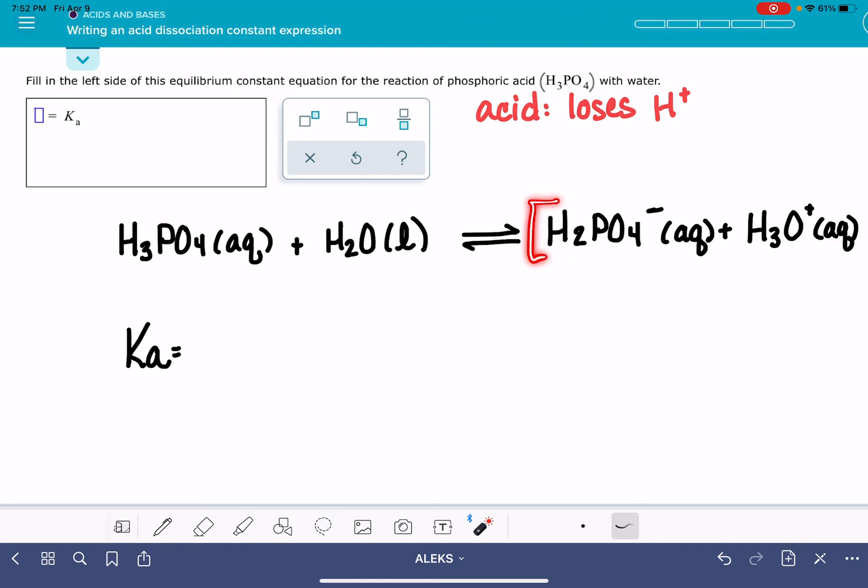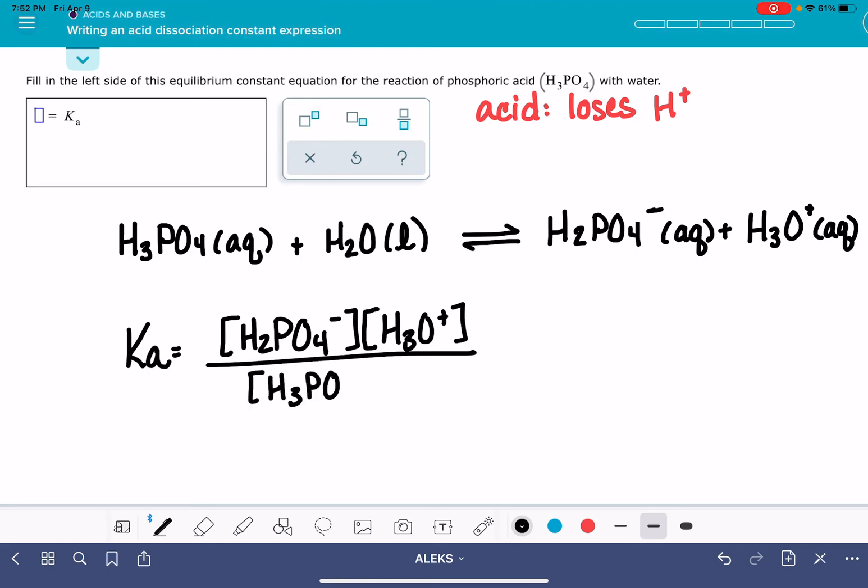Equilibrium expressions are the concentrations of our products, H2PO4-. Don't forget, you have to include those charges because Alex will mark it wrong if you leave your charges out. But you do leave out the AQ parts and the L and that kind of thing. Also, you have to put these into square brackets. That's the rule for writing an equilibrium expression. It must be in square brackets. And then we'll put that over the reactant H3PO4. Again, we leave out the H2O because we always leave pure liquids out.